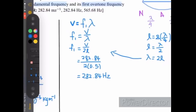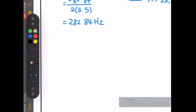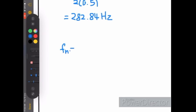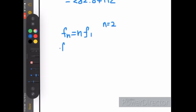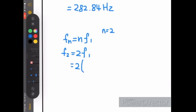Next, we find the first overtone frequency. We can use the equation fn equals n times f1. The first overtone means the first tone above the fundamental, which is the second harmonic, so n equals 2. We substitute: f2 equals 2 times f1 equals 2 times 282.84, giving the answer 565.68 Hz.